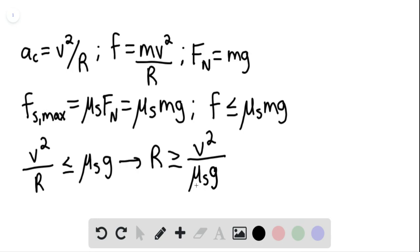The minimum radius, r min, equals velocity squared over the coefficient of static friction times g.